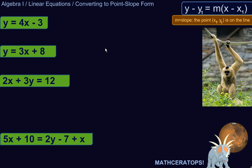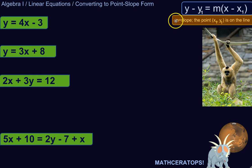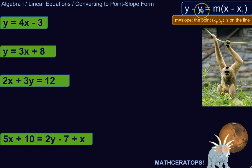Let's take some equations that are not in point-slope form and rewrite them so that they are in point-slope form. It's called that because it gives you information about one point on the line and the slope of the line. You've got the slope of the line and a point on the line — let's say (3, 4), so X equals 3, Y equals 4. We call those coordinates X1 and Y1. The equation is: Y minus the Y-coordinate of the point equals the slope times X minus the X-coordinate of the point.